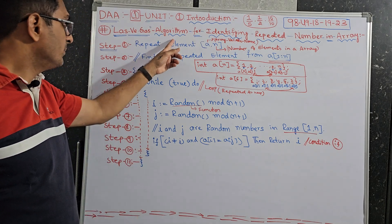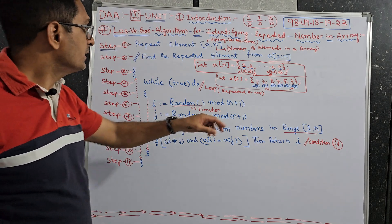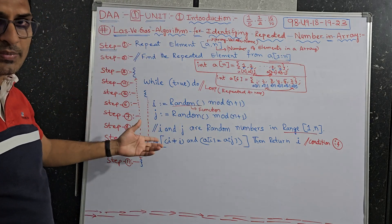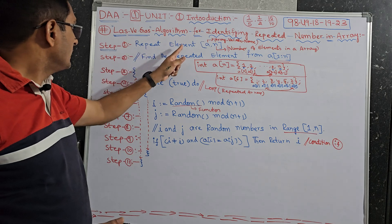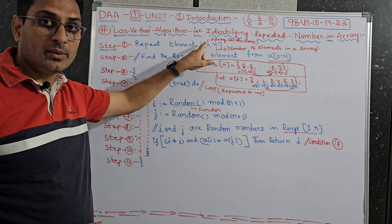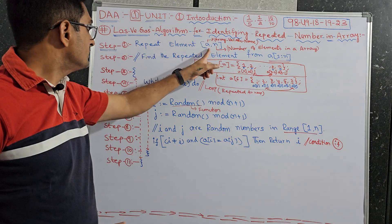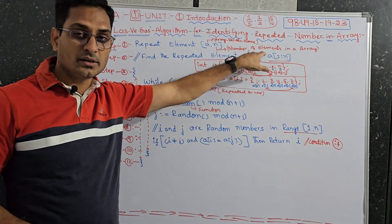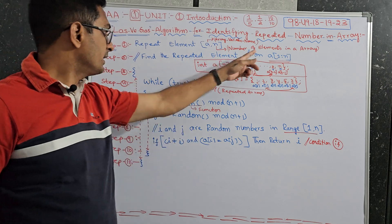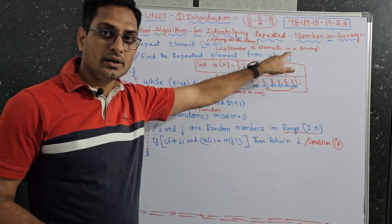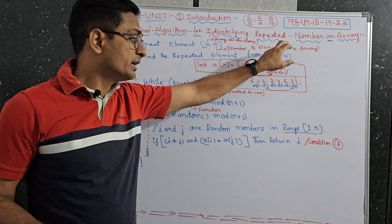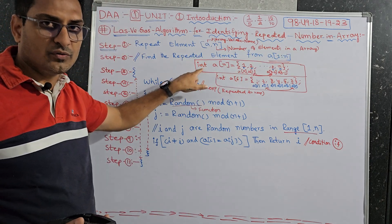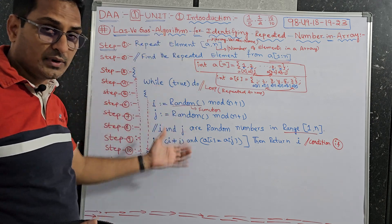Las Vegas Algorithm — repeated elements in an array. Step 1: the algorithm name is RepeatElements(a, n). Here the variables are a and n. A is the array variable name, and N is the number of elements — number of items in the array. For example, int — you can take any data type like float, here I have taken int. The algorithm will be generic.